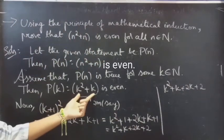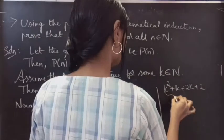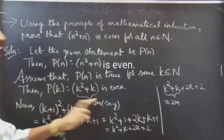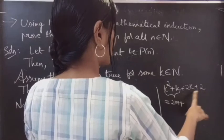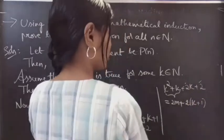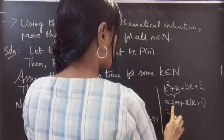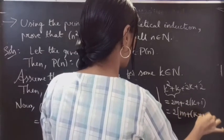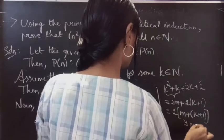We know that k squared plus k is even, which equals 2m. So we replace k squared plus k with 2m, and we still have 2k plus 2 remaining. Taking 2 common from 2k plus 2 gives 2 times (k plus 1). So the full expression becomes 2m plus 2(k+1), and taking 2 common from both terms gives 2 times (m plus k plus 1), which is 2 times a number — and therefore even.